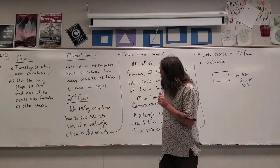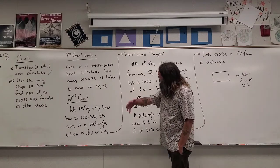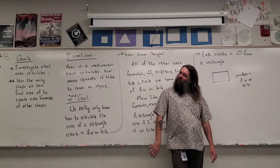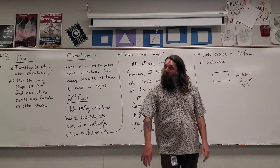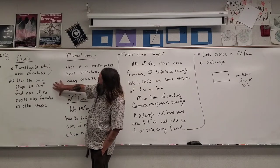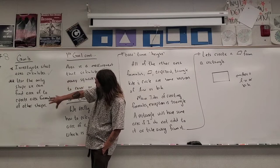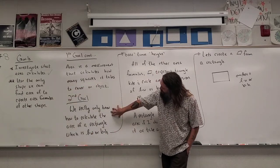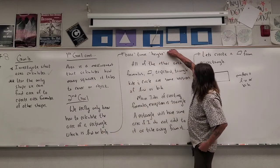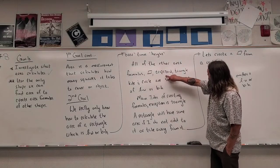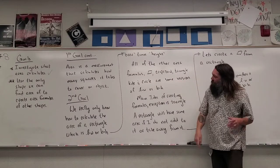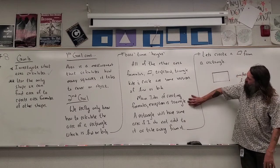I want you to understand that area is a measurement that calculates how many squares it takes to cover an object. If someone's going to paint your house, they're covering it — that means it's an area problem. Our second goal is to use the only shape we can find the area of to create area formulas for other shapes. We really only know how to calculate the area of a rectangle: length times width, or base times height. All other area formulas — parallelogram, trapezoid, triangle, kite, and circle — are some version of base times height.